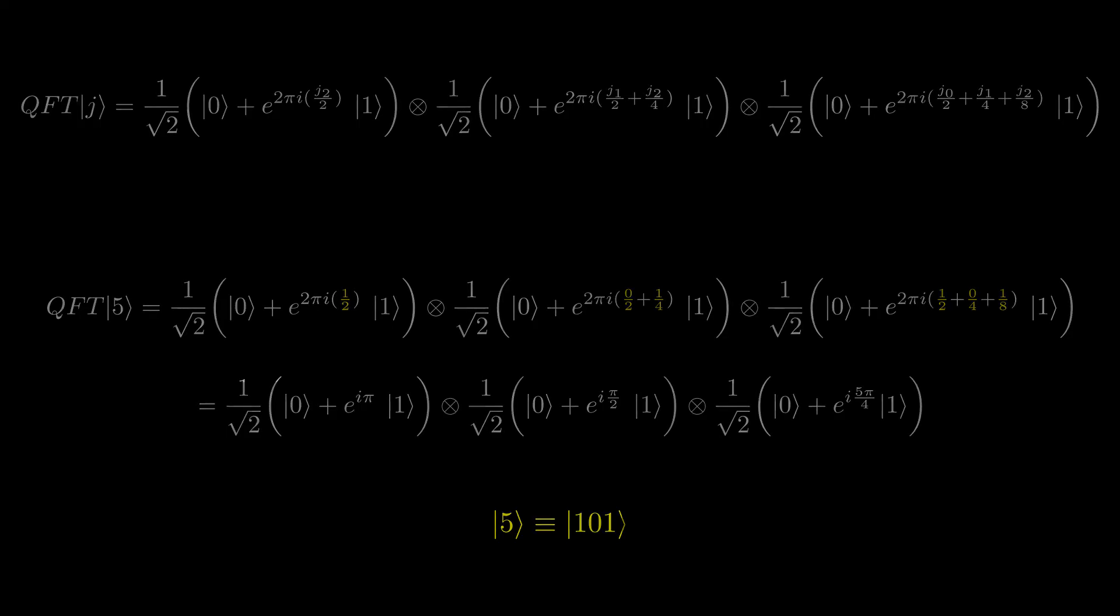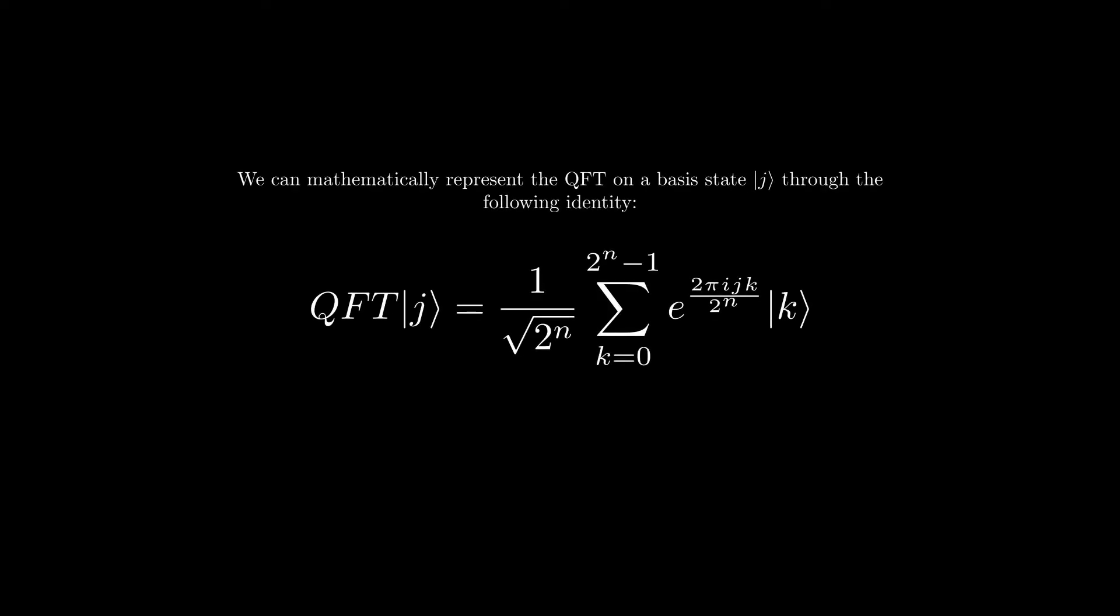If we were to apply the quantum Fourier transform to an arbitrary basis state j, we get 1 over root 2 to the power of n, times the sum from k equals 0 to 2 to the n minus 1, e to the power of 2 pi i, jk, over 2 to the n, k, where n is the number of bits in j.